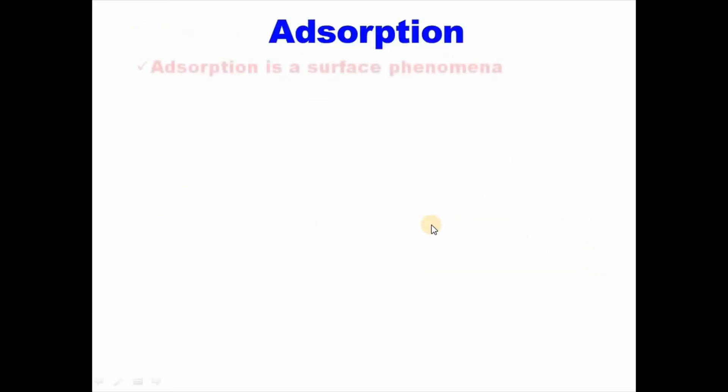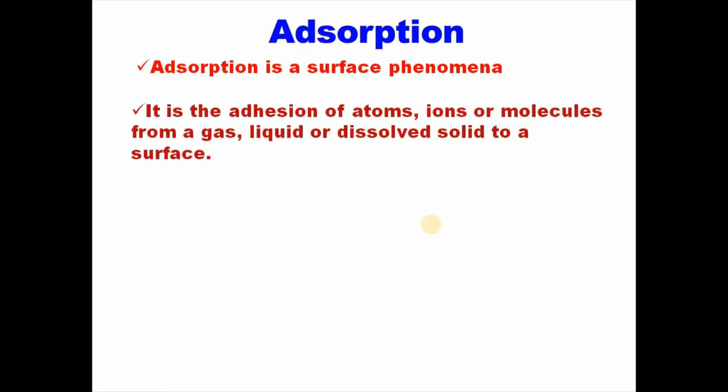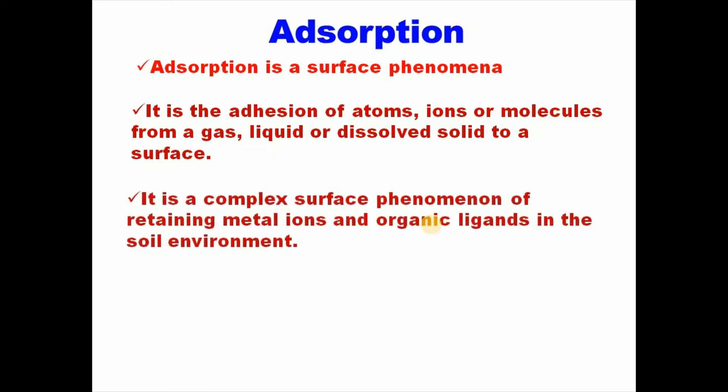Adsorption is a surface phenomena. It is the adhesion of atoms, ions or molecules from a gas, liquid or dissolved solid to a surface. And it is a complex surface phenomena of retaining metal ions and organic ligands in the soil environment. And it is the accumulation of a solute from a solution onto a solid surface.